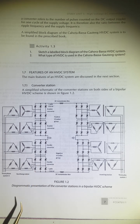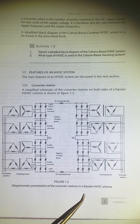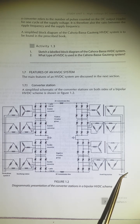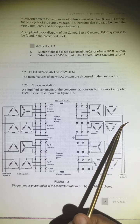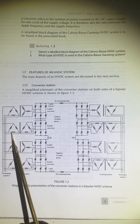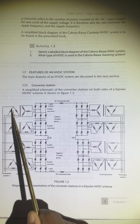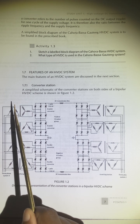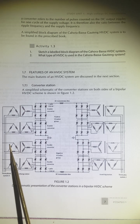This is a diagrammatic presentation of the converter stations in a bipolar HVDC scheme. On this diagram, we have a three-phase system A as input and a three-phase system B as output. There are DC transformers connected in a delta-delta configuration on the primary side, and delta-star and delta-delta on the secondary side.